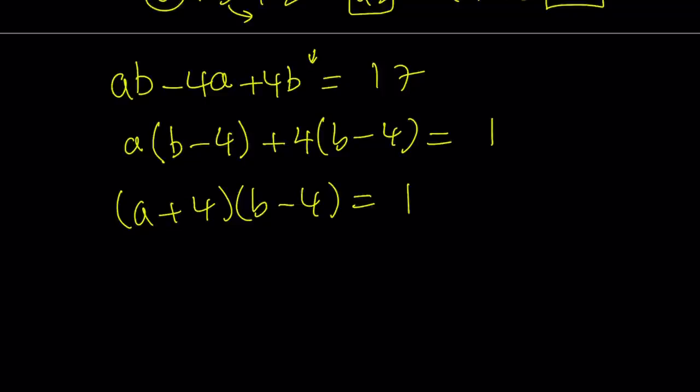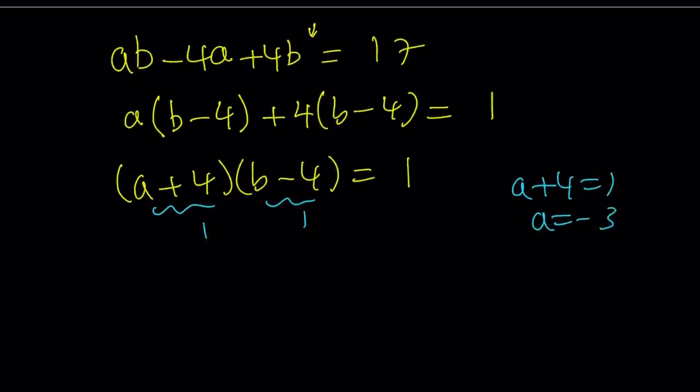So first case scenario, we're going to set both of these equal to 1. So from here we get the following. If a plus 4 is equal to 1, that means a is equal to negative 3. Now one thing that we always need to check, these values against our restrictions. But let's go ahead and do the b as well. b minus 4 is equal to 1, and b is equal to 5.